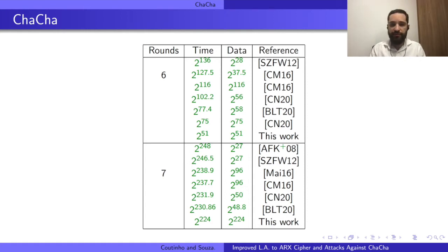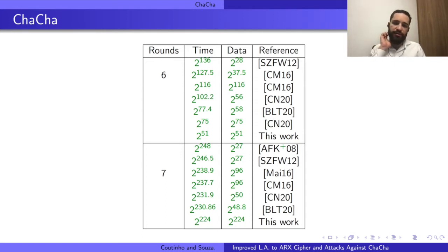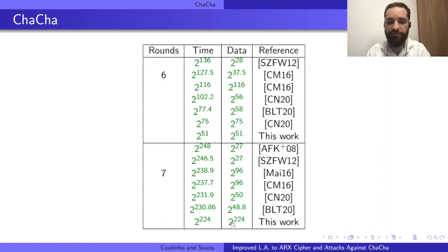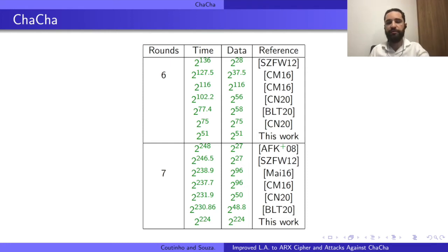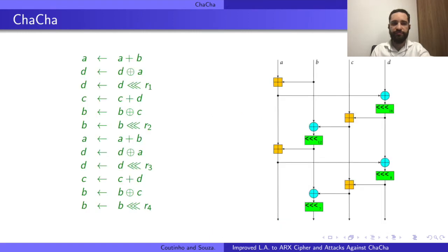Since ChaCha is very important, it is also important to understand its security well. These are the main results of cryptanalysis and reduced-round attacks on ChaCha. This work improves attacks for six rounds and seven rounds. In the case of the seven-round attack, there is a trade-off on time and memory, but it is also the first work in which we developed linear approximations reaching up to seven rounds.